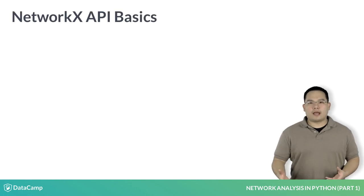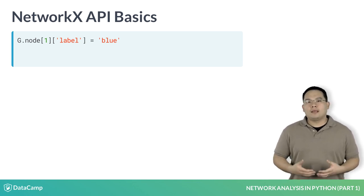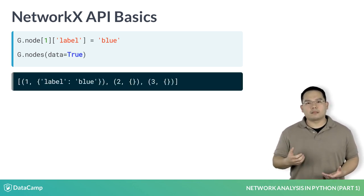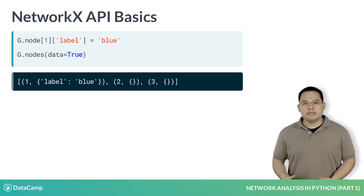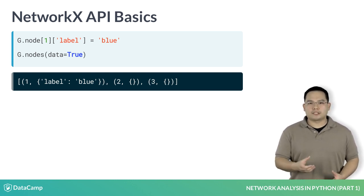Metadata can be stored on the graph as well. For example, I can add to the node 1 a label key with the value blue, just as I would assign a value to the key of a dictionary. I can then retrieve the node list with the metadata attached using g.nodes, passing in the data equals true argument. What this returns is a list of two tuples in which the first element of each tuple is the node, and the second element is a dictionary in which the key value pairs correspond to my metadata.